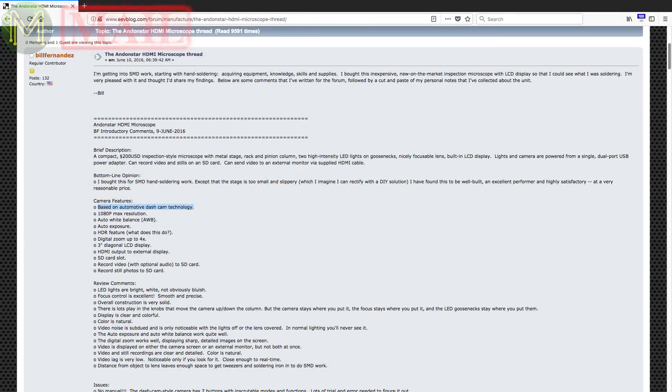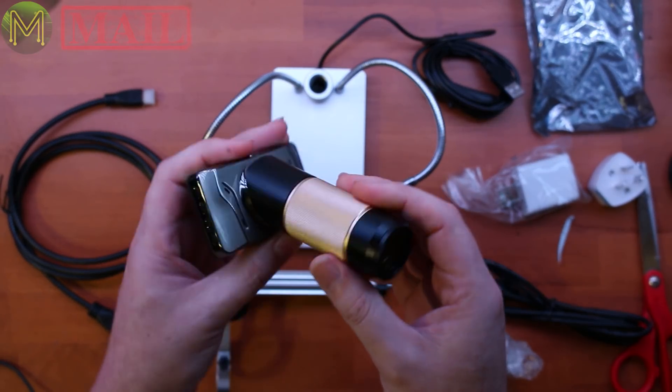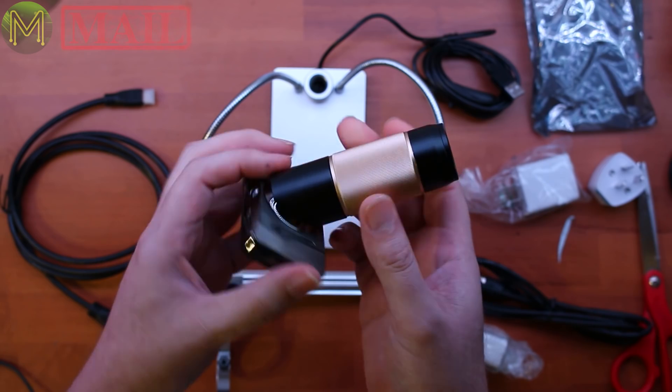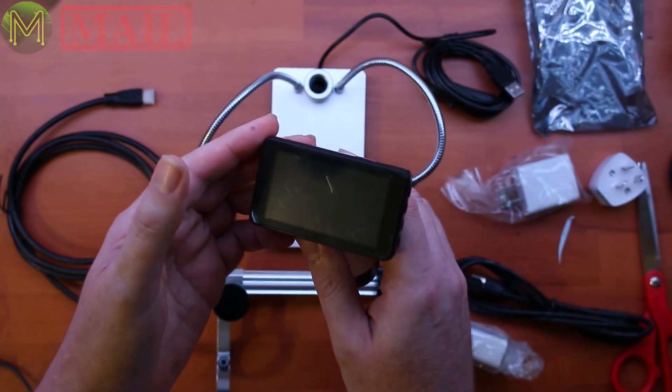Now if you look at the EEV blog forums there's a lot of comments there about this particular unit saying it's actually a repurposed dash cam or crash cam for your vehicle. They've gone and added a microscope lens onto it. So since it's a fixed lens you can't change it out to something with a higher magnification but let's set it up and see what it looks like.